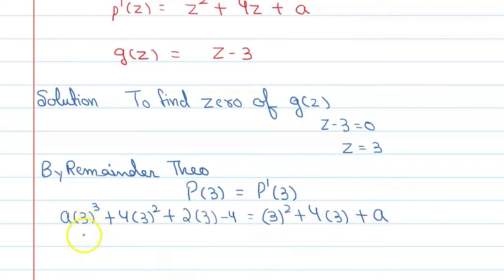If we solve this, we will get 27a + 3×3 is 9, 9×4 is 36 plus 2×3 is 6 minus 4. Again, 9 + 12 + a. When we solve this, we take a to the left-hand side: 27a - a becomes 26a.